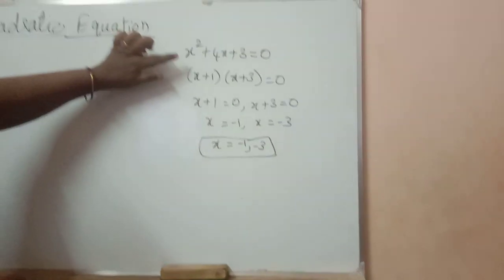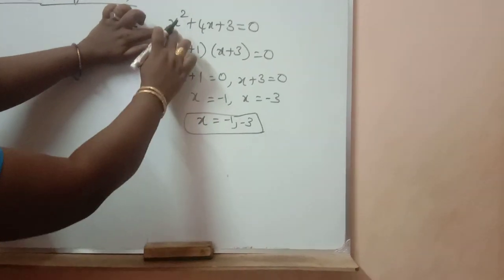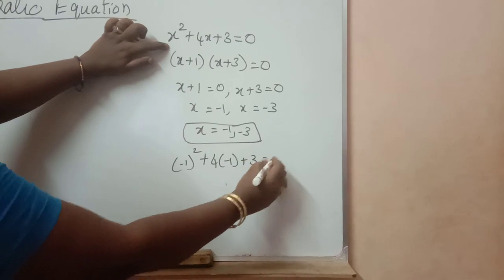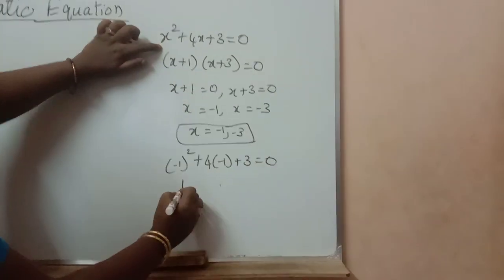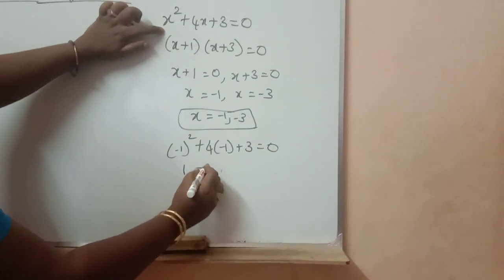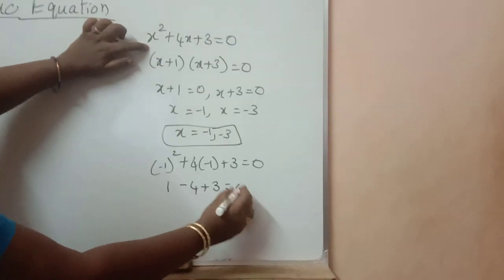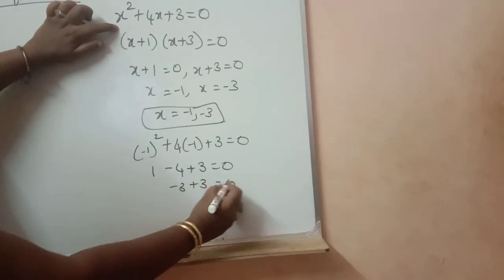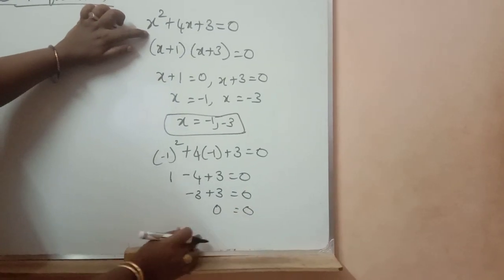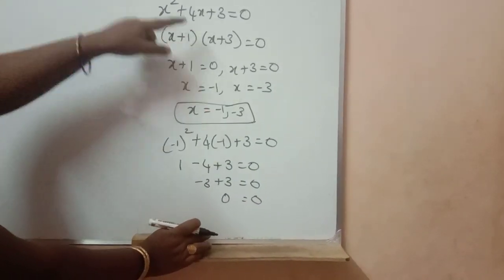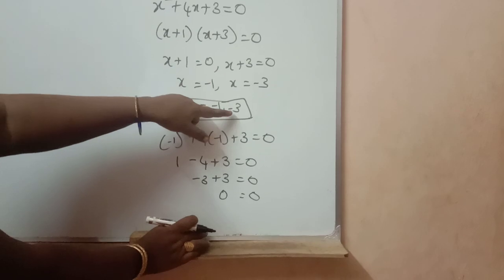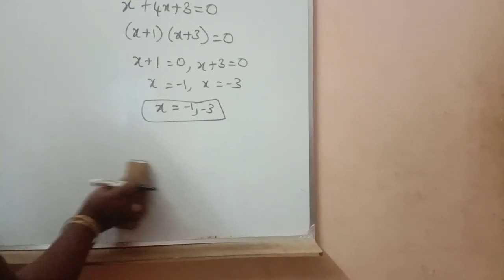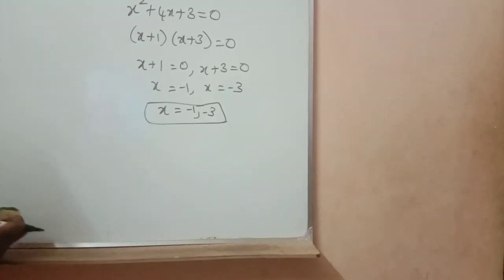In this equation, if we substitute x equal to minus 1: minus 1 squared plus 4 into minus 1 plus 3 should be satisfied. So 1 plus 4 into minus 1 plus 3 gives 1 minus 4 plus 3, which equals 0. It is satisfied. If we substitute x equal to minus 3, this equation will also be satisfied. These are called the solution of the equation or the roots of the equation.